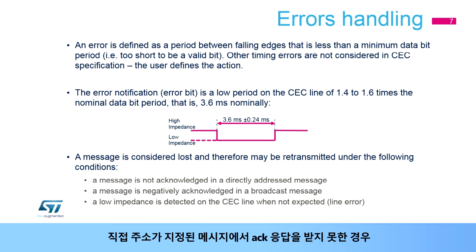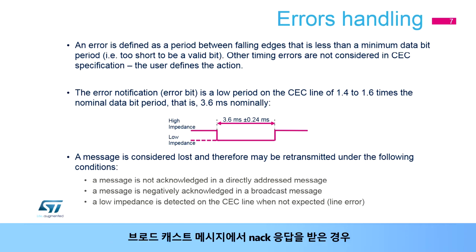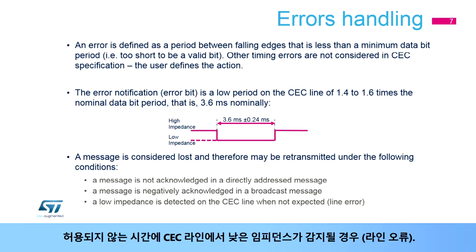A message is not acknowledged in a directly addressed message, a message is negatively acknowledged in a broadcast message, or a low impedance is detected on the CEC line when not expected — a line error.